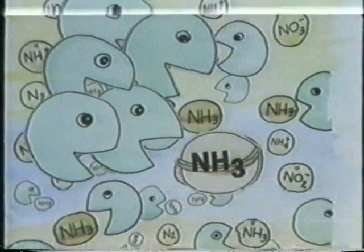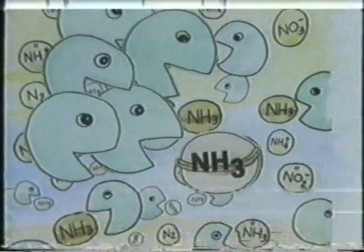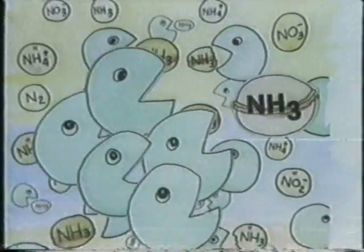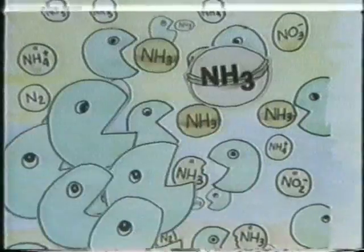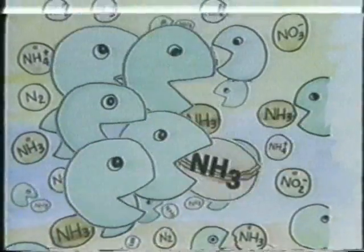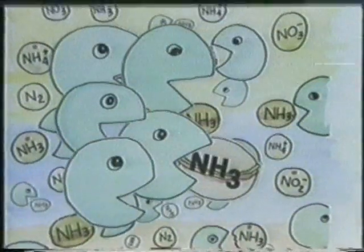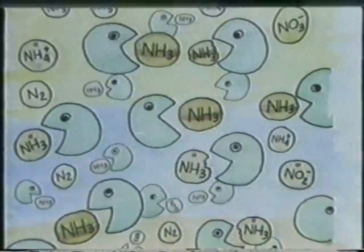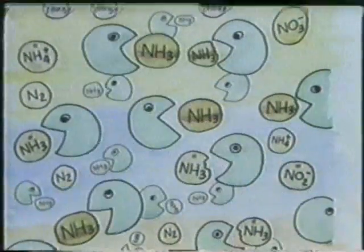Ammonia is associated with other nitrogen compounds like ammonium ion, nitrite, nitrate, and nitrogen gas, and is a source of fertility for the blue-green algae, a favorite food for aquatic vegetarians. Although associated with water fertility, ammonia is poisonous to fish.